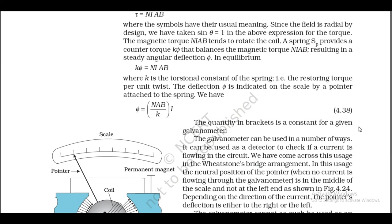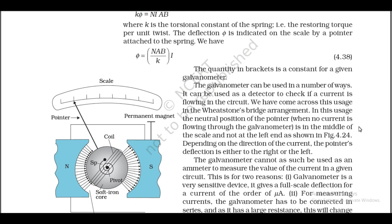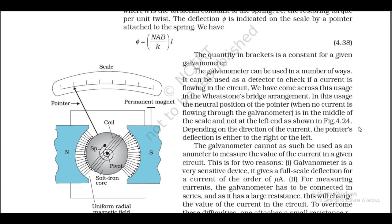In equilibrium: kφ = NiAB, where k is the torsional constant of the spring (restoring torque per unit twist). The deflection φ is indicated on the scale by a pointer attached to the spring. Thus φ = (NAB/k)·i — the quantity in brackets is a constant for a given galvanometer. The galvanometer can be used as a detector to check if a current is flowing in a circuit, as used in the Wheatstone bridge arrangement. In this usage, the neutral position of the pointer (no current) is the middle of the scale; depending on the direction of current, the pointer deflects either to the right or to the left.